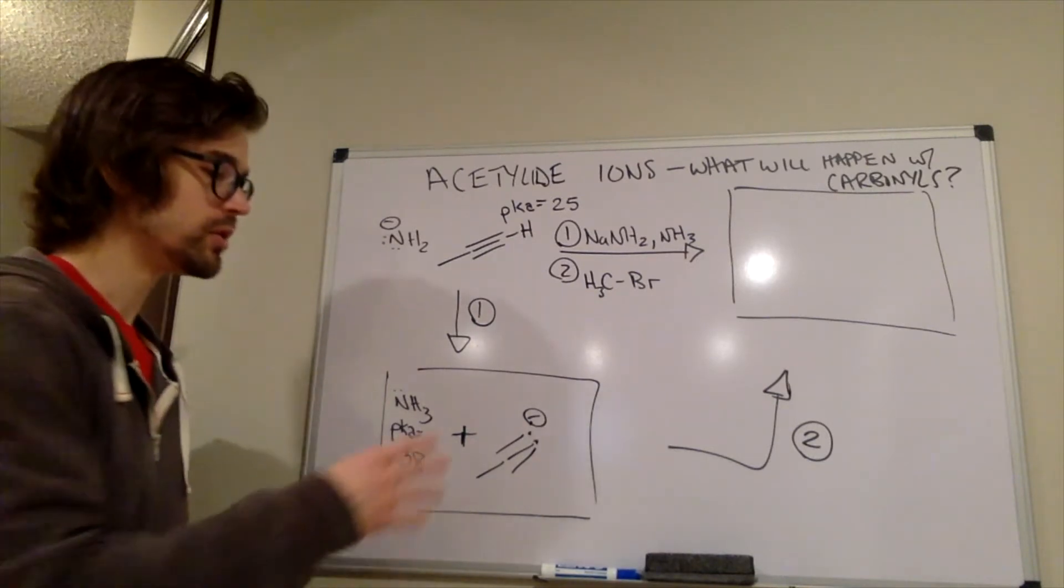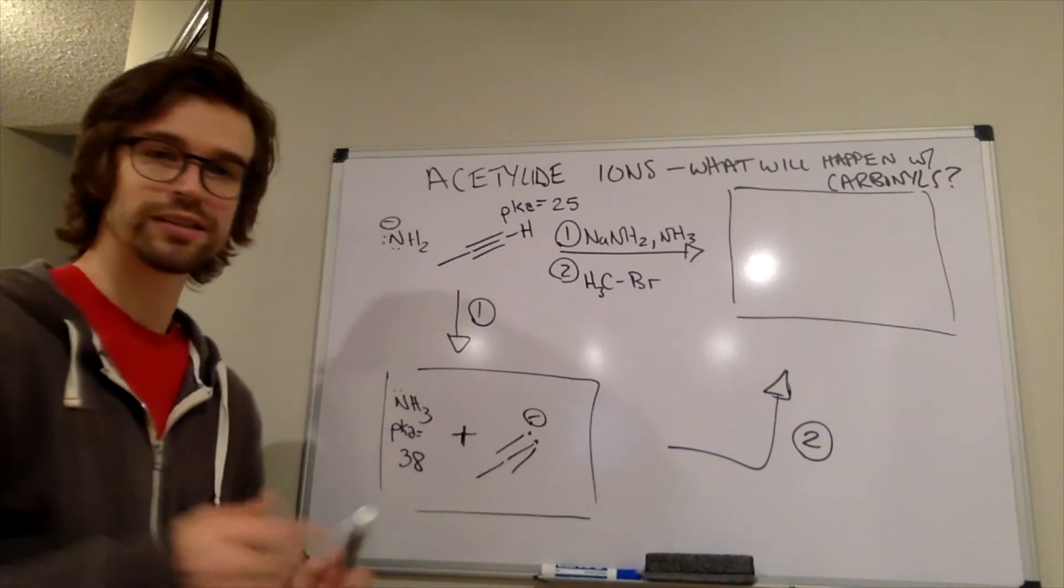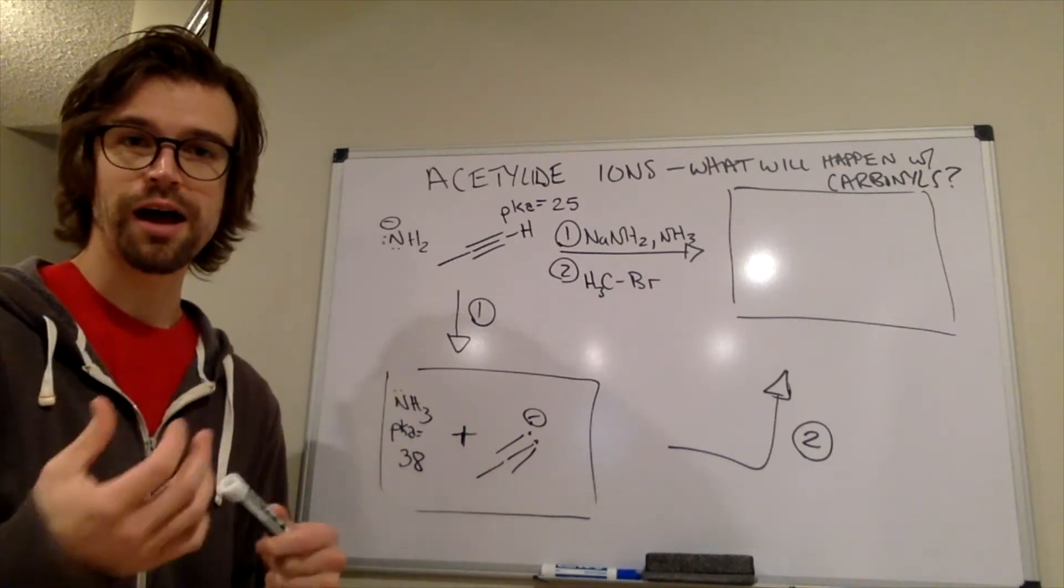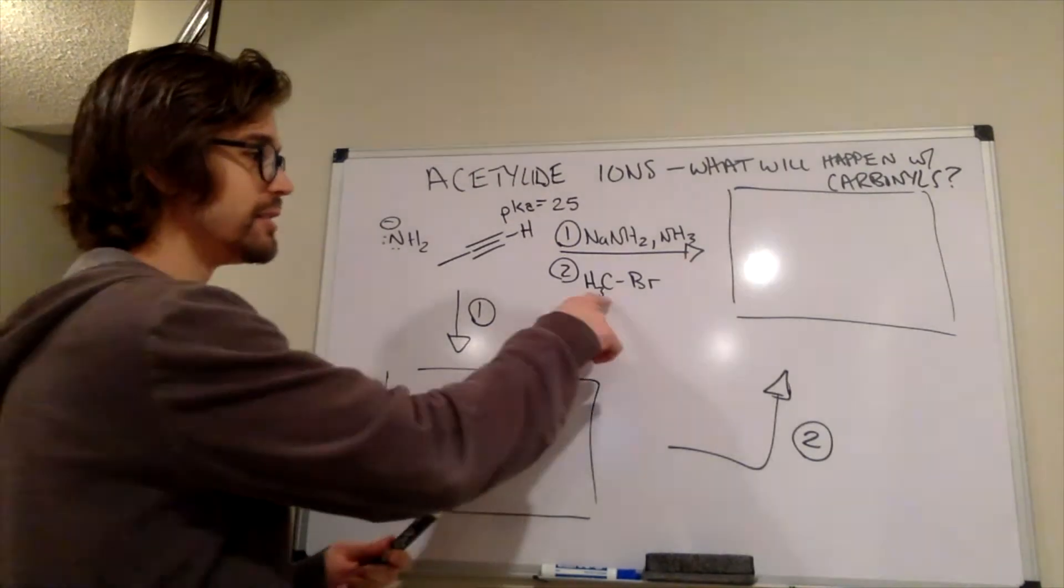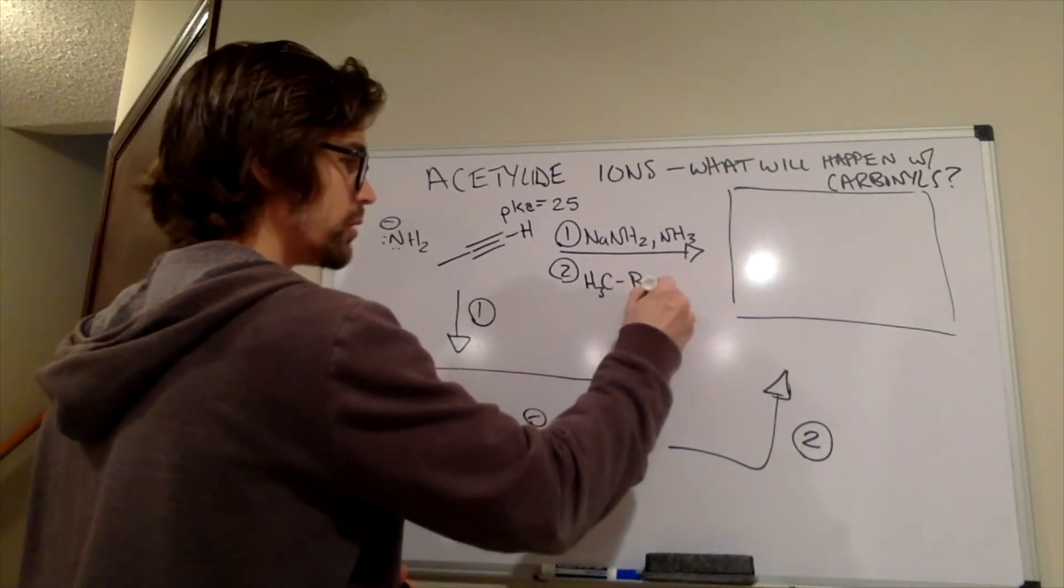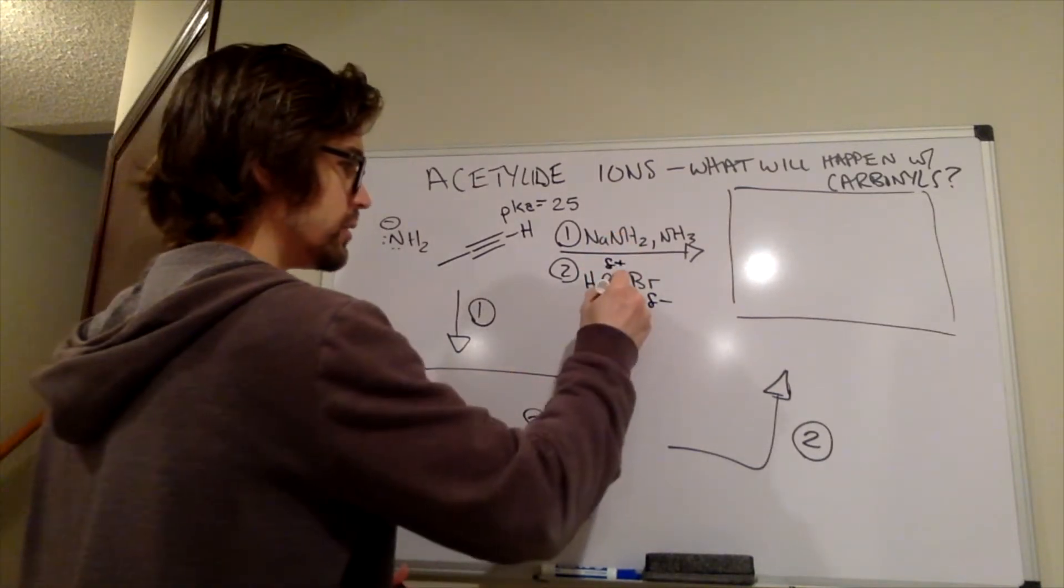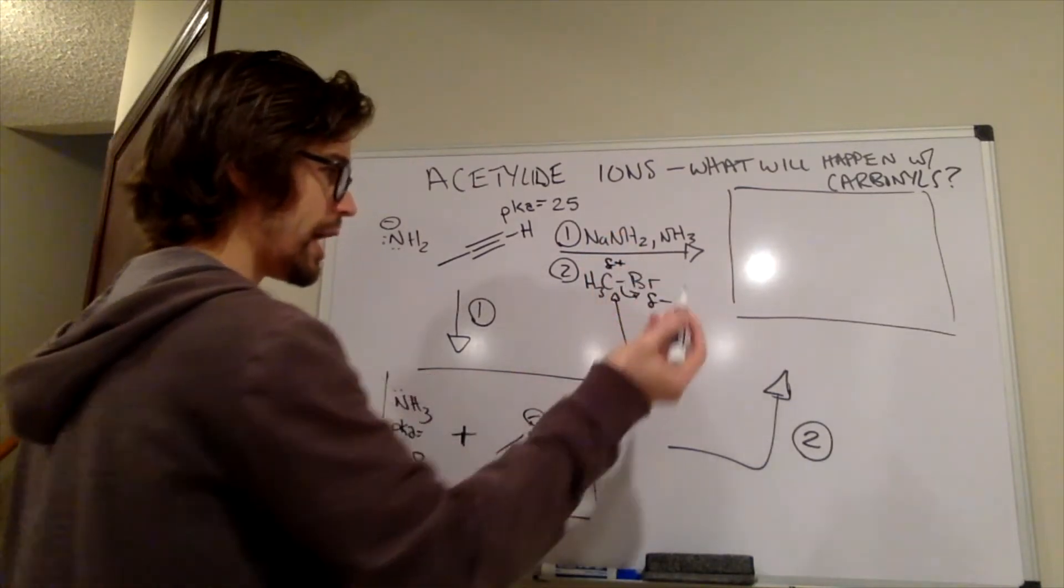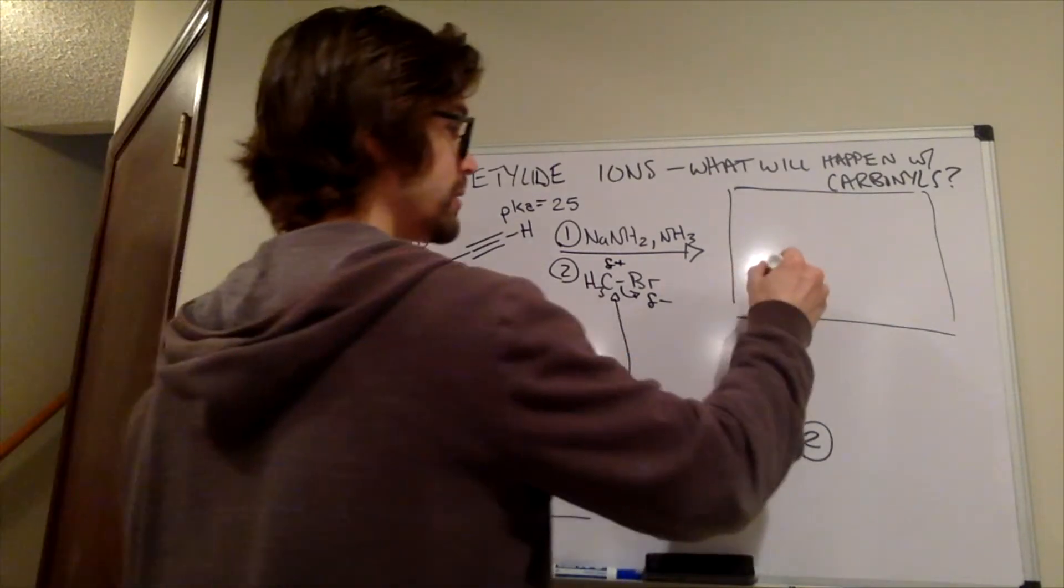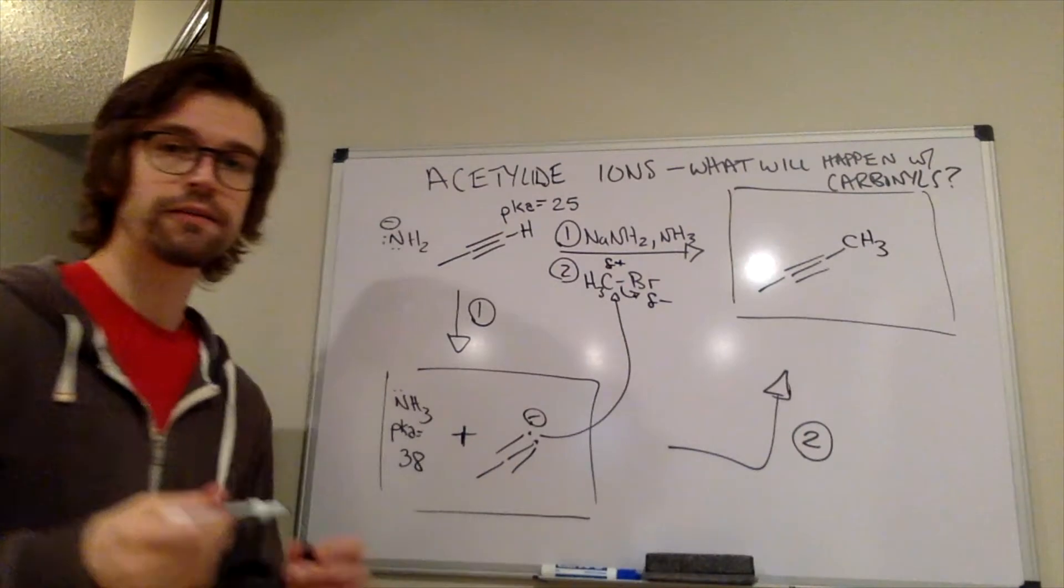What happens next? We took our acetylide ion. It's negatively charged. It's a nucleophile. It wants to add electron density to a positive charge, and we're adding CH3Br to that. We know that this is a polarized bond, a partial minus on that Br, partial plus on that carbon. So this is just going to be a straight-up SN2 reaction. That would essentially add a CH3 to the other side of that acetylene.